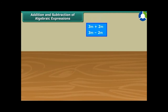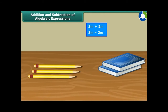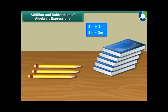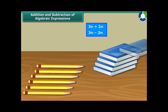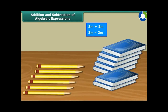We can only add or subtract like terms. Think of it like this: on a table, we have three pencils and two books. We cannot add the three pencils to the two books because they are not the same kind of objects. If we get another three pencils and five books, we now have six pencils and seven books, but we can't combine these different objects. Similarly, if we remove one pencil from six, we are left with five pencils, but still have seven books. It's quite similar with algebra — we can only add or subtract similar objects.